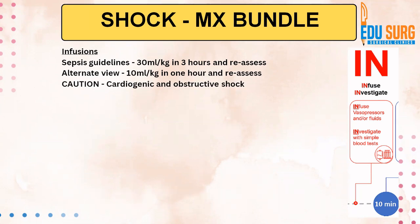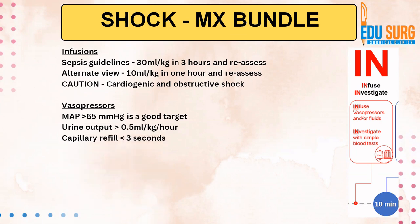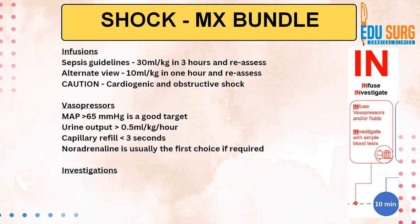However, if there is cardiogenic or obstructive shock, you know that the volume is normal. These patients will not benefit from large volume resuscitation. In these cases, vasopressors are important. The target is mean arterial pressure greater than 65 mmHg. Whenever you give infusions or vasopressors, you look at MAP greater than 65 mmHg, urine output greater than 0.5 ml per kg per hour, and capillary refill less than 3 seconds. For shock, noradrenaline is usually the first choice vasopressor if required.